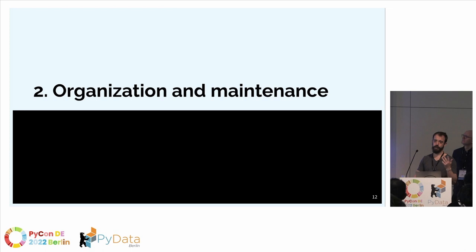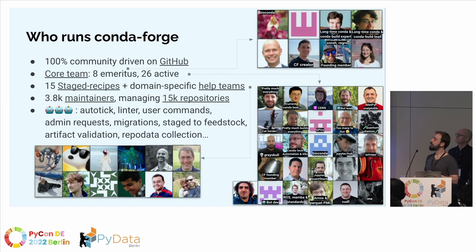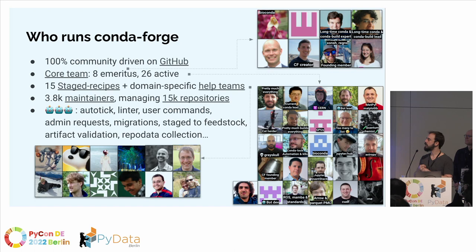How is it organized? It's 100% community-driven — there's no full-time employee, only people contributing their time, maybe with some company support. The core team has 8 emeritus members and 26 active members. There are 15 staged-recipes volunteers and domain-specific help teams. There's also an army of bots — bumpers, linters, user commands and requests. You can create an issue with a specific title and a bot will act on it — like magic.